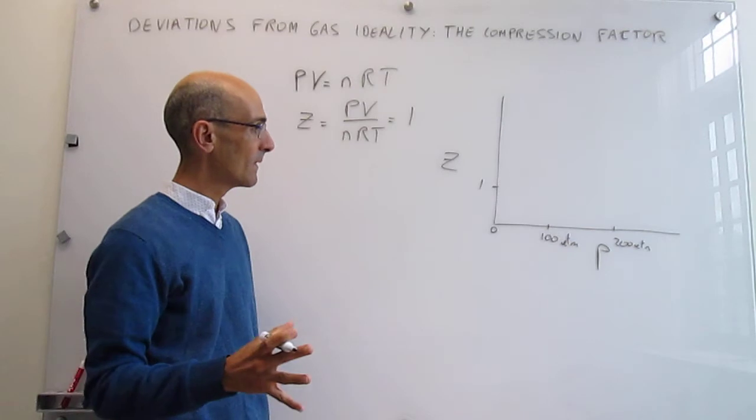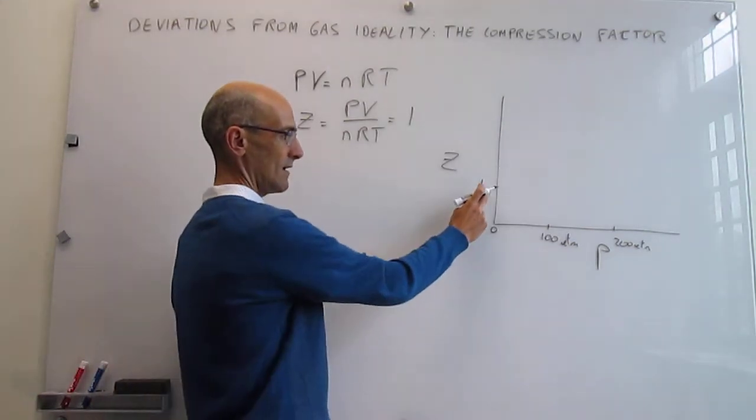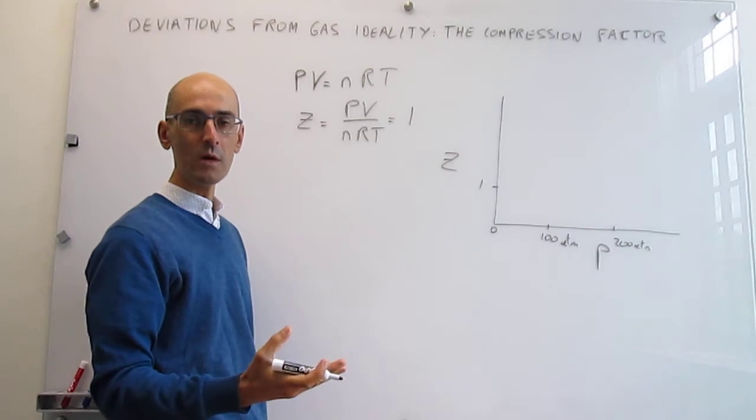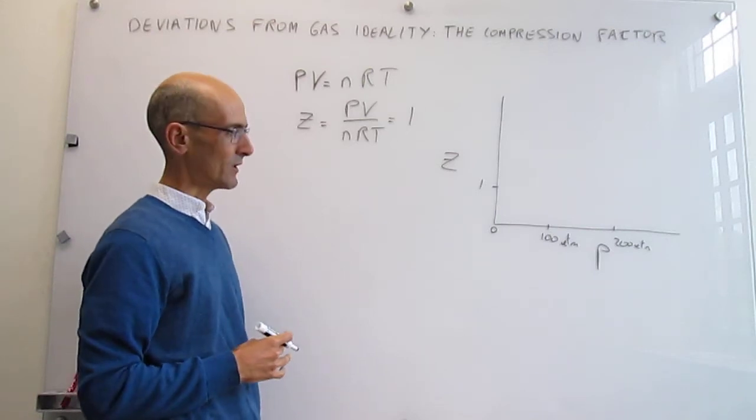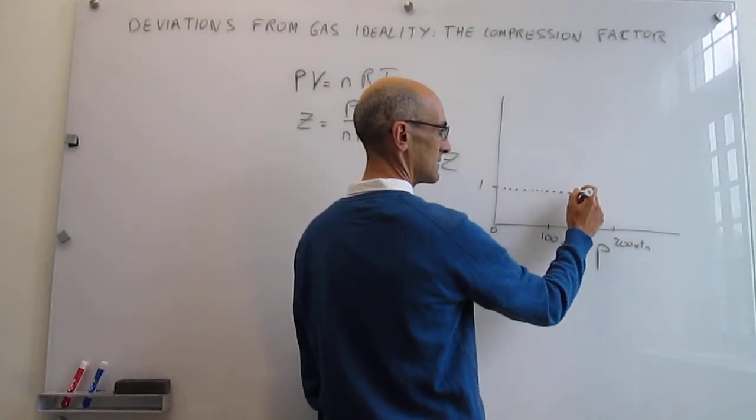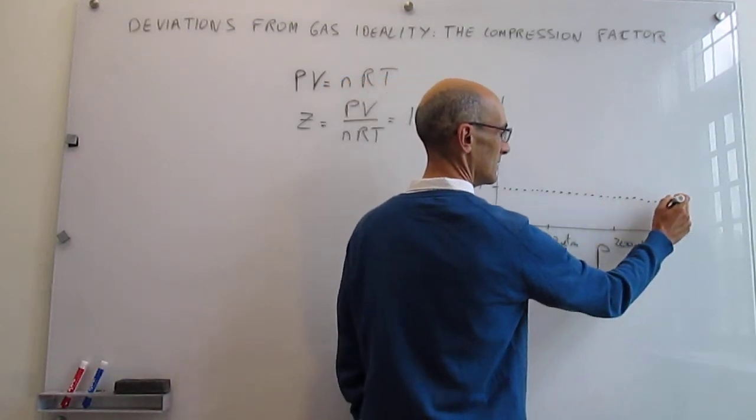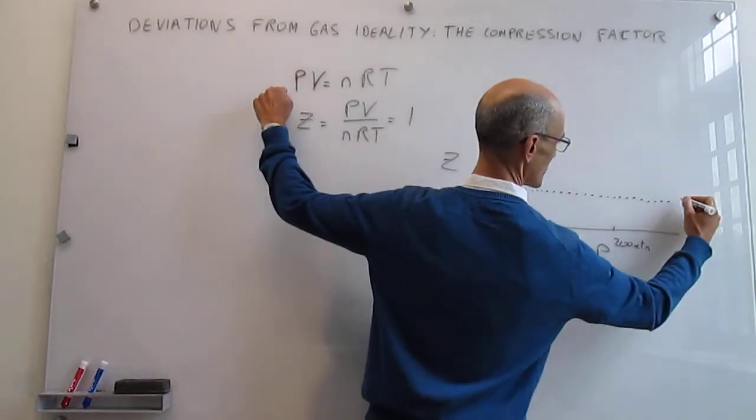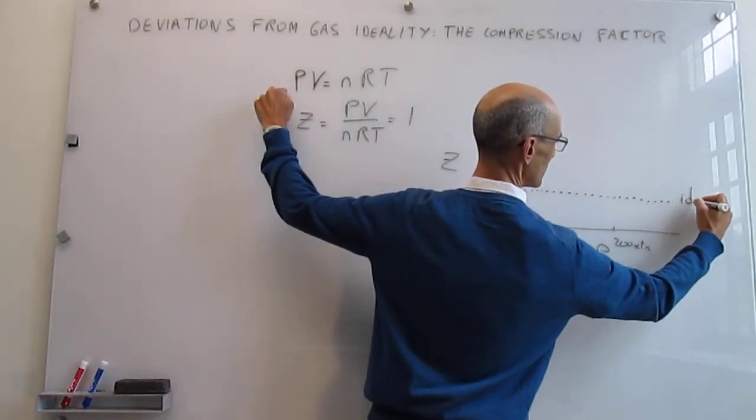If a gas behaves ideally, you would expect this value of the compression factor to be 1 regardless of pressure. So the ideal behavior will be a line like this - Z equals 1 at all pressures, which means this equation applies at all pressures.